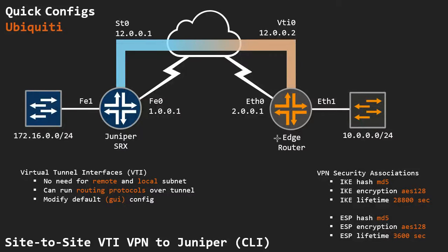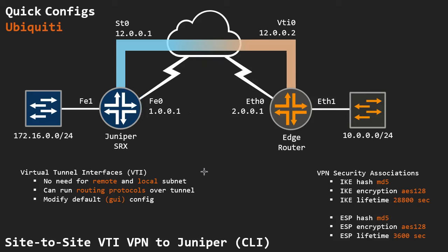In this video I'm going to configure a site-to-site VPN connection from a Ubiquiti EdgeMax device, in this case an EdgeRouter X, to a Juniper SRX. I'm going to use virtual tunnel interfaces on the Juniper and on the EdgeRouter. I have a very simple network here. The external interface on the Juniper is FE0 with the 110.0.1 address, and the E0 address on the EdgeRouter is sitting at 200.0.1. They both have a default gateway going out to my simulated internet, and over that I am going to establish a VTI tunnel.